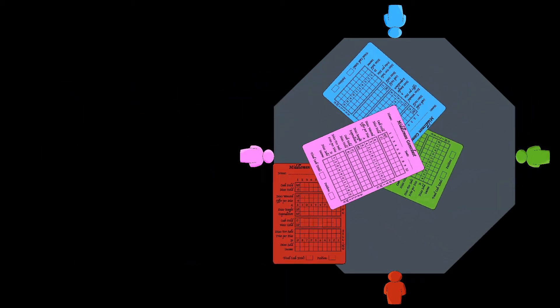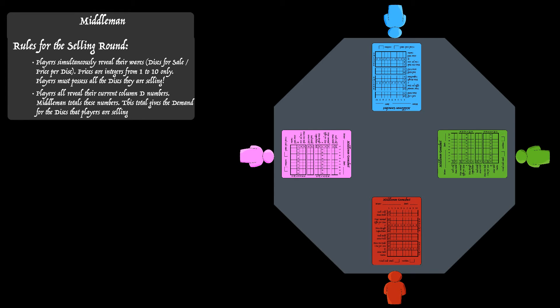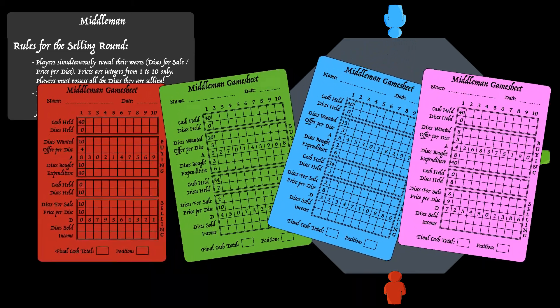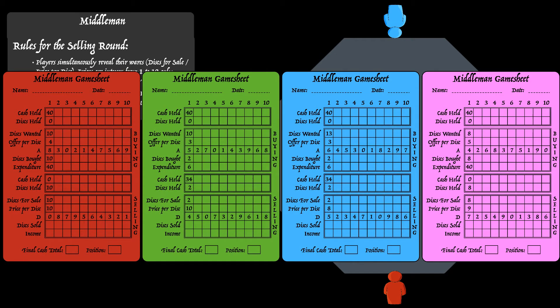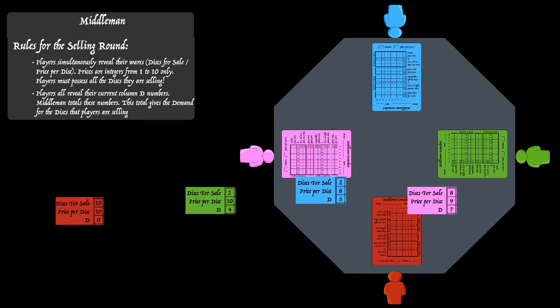Having completed these summaries, players are now going to enter the selling round. The rules are very similar to the buying round. All players decide on the number of disks they're going to sell and the price they're going to put on them. Prices are always from 1 to 10 — no more than 10 — and always integers. Once that's decided, here's the completed sheets. All players have summarised the cash they now hold and the disks that they hold. They've filled in the disks they're hoping to sell and the price they're offering. The D numbers are now important to establish how much the middleman wants.